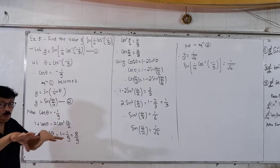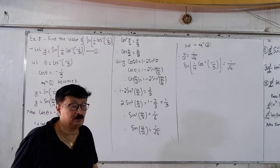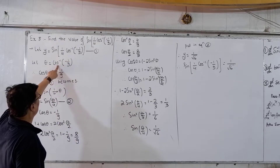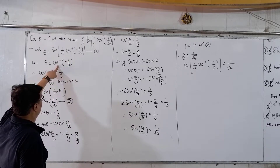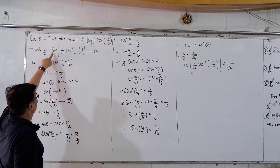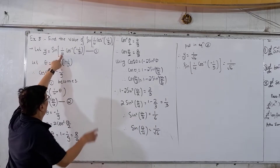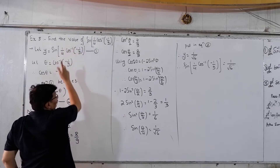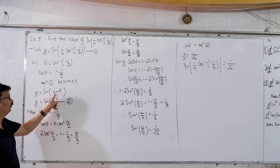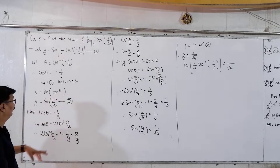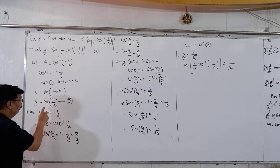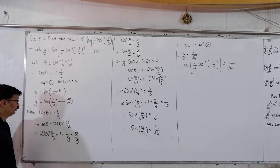Now don't jump to find sin immediately. First, since θ = cos⁻¹(−1/9), Equation 1 becomes y = sin(θ/4). This is Equation 2: y = sin(θ/4).